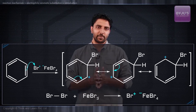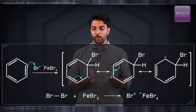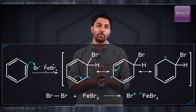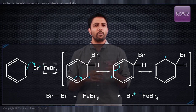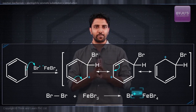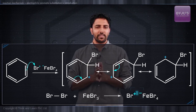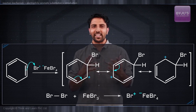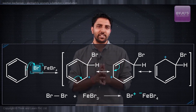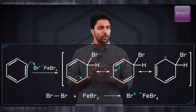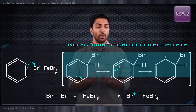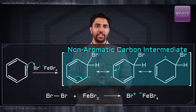Now, bringing back aromatic electrophilic substitution, look at the mechanism. The catalyst makes the bromine molecule more electrophilic by polarizing it to give this species. The cationic electrophile reacts as if it were a Br⁺ species.